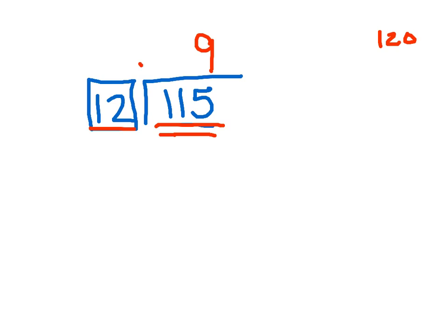Now we just multiply it out. 9 times the 2, that's going to get me 18. Carry the 1 there. 9 times 1 is 9, plus the 1 gets me 10.